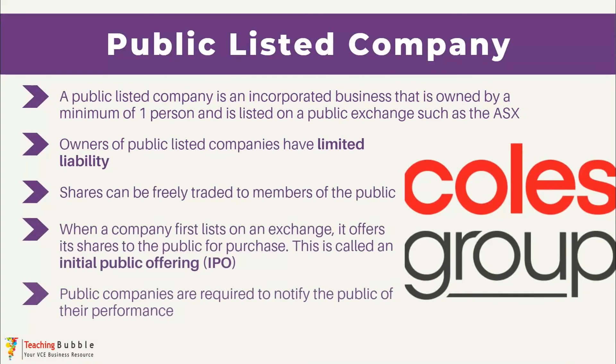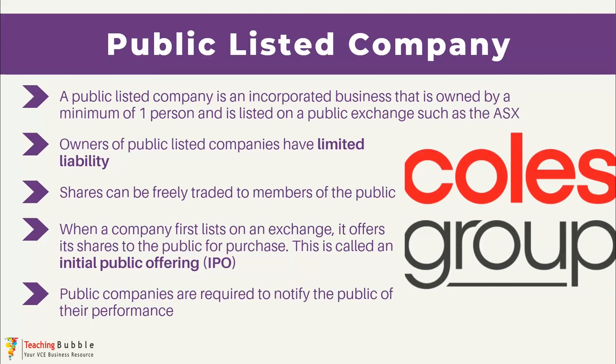Next we have a public listed company, which is an incorporated business owned by a minimum of one person and listed on a public exchange such as the ASX. In practice it's incredibly rare for a public company to have only one owner — they'll often have thousands — but legally only one is required, and all owners have limited liability. The key feature is that shares are available to trade on a public exchange, so anyone can purchase or sell shares using a broker. When a company first lists on a public exchange like the Australian Securities Exchange, it offers shares to the public for the first time in what is called an initial public offering, or IPO. The company then uses the capital generated by selling shares to grow its profits over time.